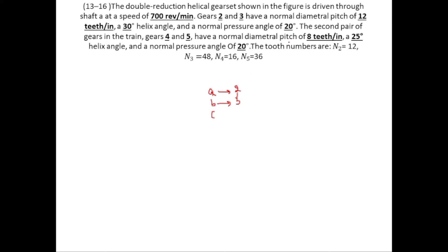Gears 2 and 3 are meshed with each other. Gear 2 on shaft A is revolving at 700 RPM. The normal diametral pitch for gears 2 and 3 is 12 teeth per inch, the helical angle is 30 degrees, and the normal pressure angle is 20 degrees. Gear 4 is also mounted on shaft B and is a driving gear. Gear 5 is mounted on shaft C and is a driven gear. For gears 4 and 5, the normal diametral pitch is 8 teeth per inch, helix angle is 25 degrees, and pressure angle is 20 degrees. The teeth on gear 2 are 12, gear 3 has 48, gear 4 has 16, and gear 5 has 36.